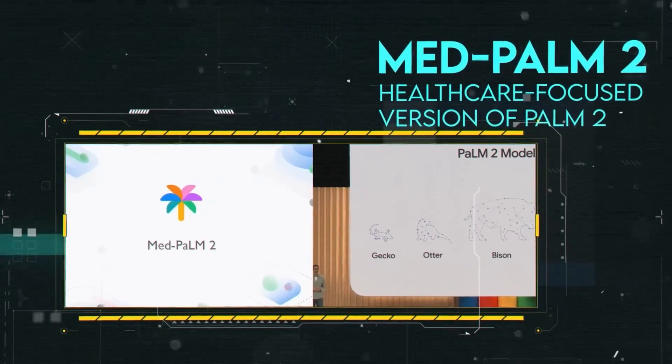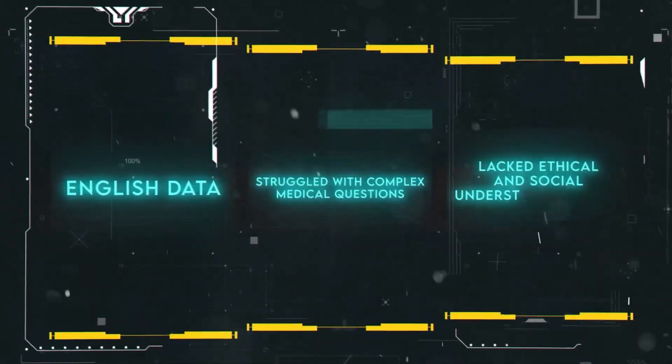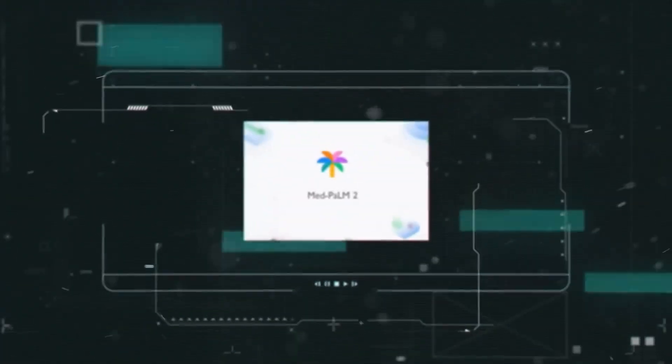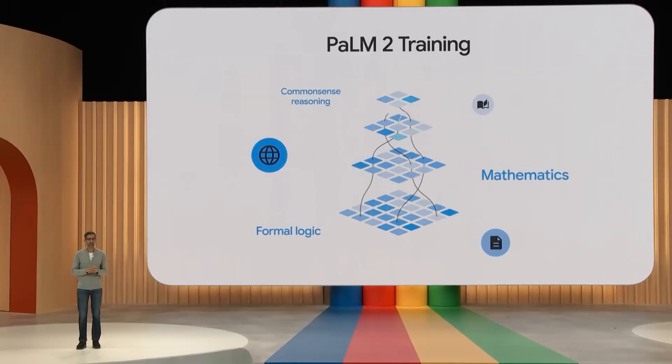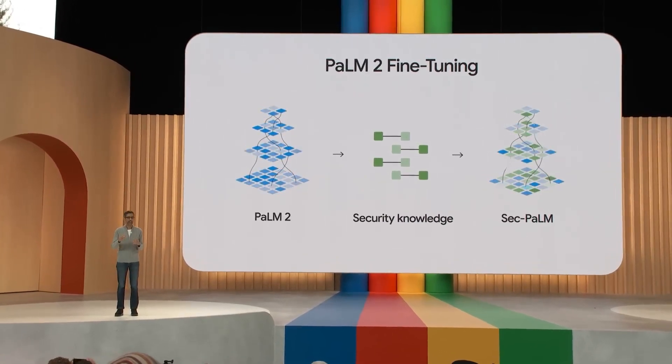Now, while all this sounds pretty overwhelming, the Palm 2 is anything but. In fact, it's more streamlined and agile than its predecessor, thanks to an approach known as compute-friendly scaling. Simply put, this method ensures the Palm 2 is faster and more cost-effective, all while being smaller in size.